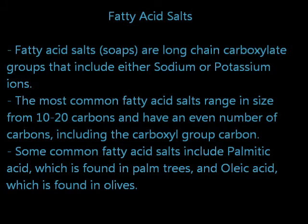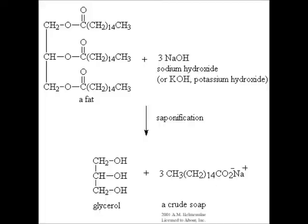Fatty acid salts are long chain carboxylate groups that include either sodium or potassium ions. The most common fatty acid salts range in size from 10 to 20 carbons and have an even number of carbons, including the carboxyl group carbon. Some common fatty acid salts include palmitic acid, which is found in palm trees, and oleic acid, which is found in olives.